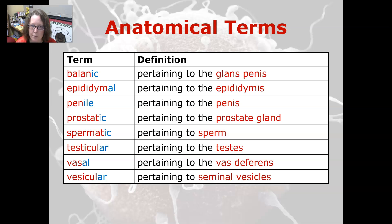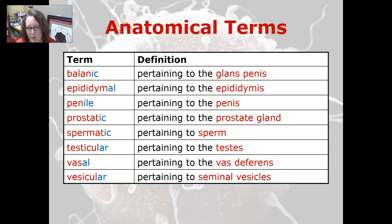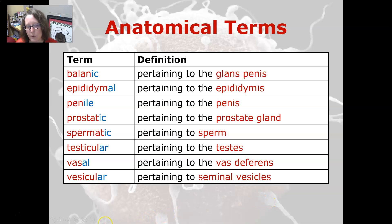Prostatic is pertaining to the prostate gland, spermatic is pertaining to sperm, testicular is pertaining to the testes, vasal is pertaining to the vas deferens, and vesicular is pertaining to seminal vesicles. That wraps up all root cards for the male reproductive system.